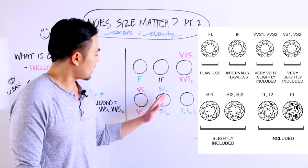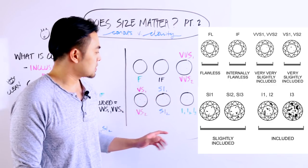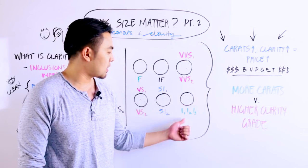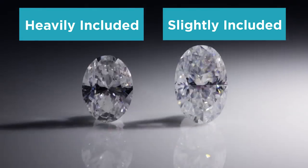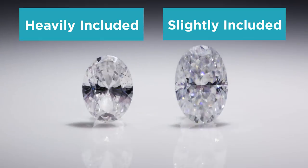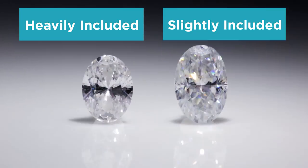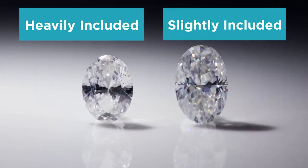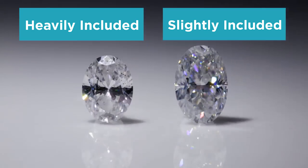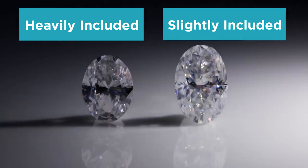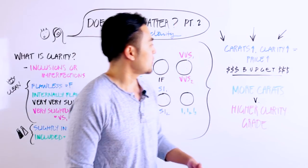So even though an SI1 or 2 is considered lower end of the clarity grade, for melees specifically, it's actually very high quality because at the end of the day, the melees are so small that you can barely see it. But with that being said, an SI1 and SI2, obviously they're peppered around a little bit more in terms of where the inclusions are and then the heavily-included stone, I1, I2, I3, you can definitely see it with the naked eye when it's completely noticeable. And you can actually notice it just by looking at it with the naked eye, then it's basically an included stone.